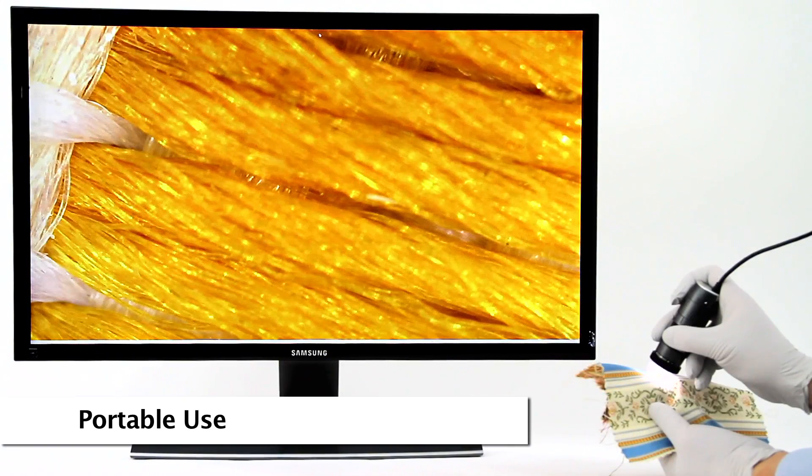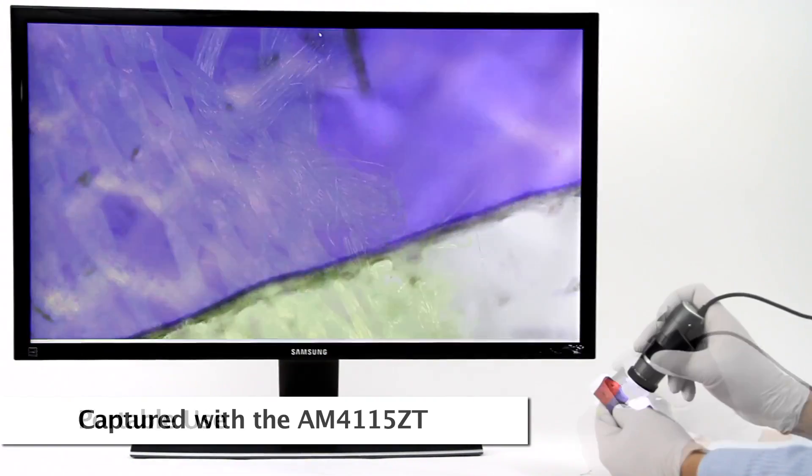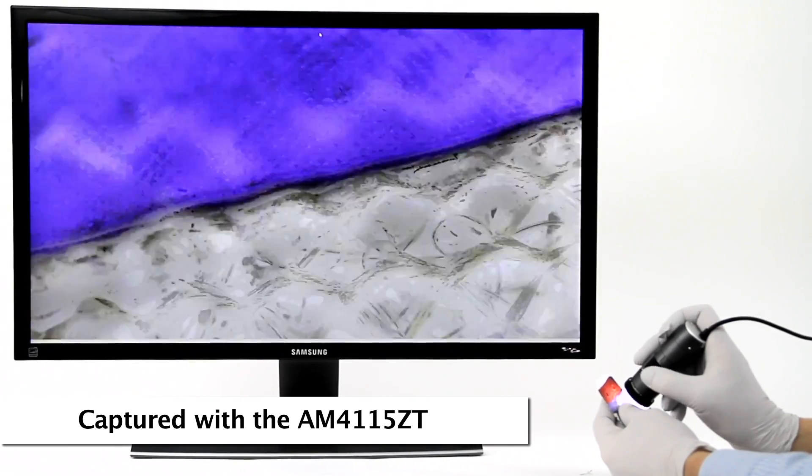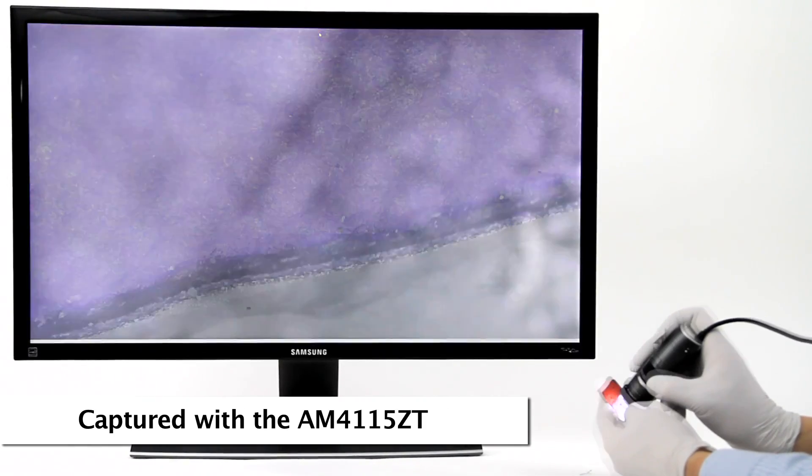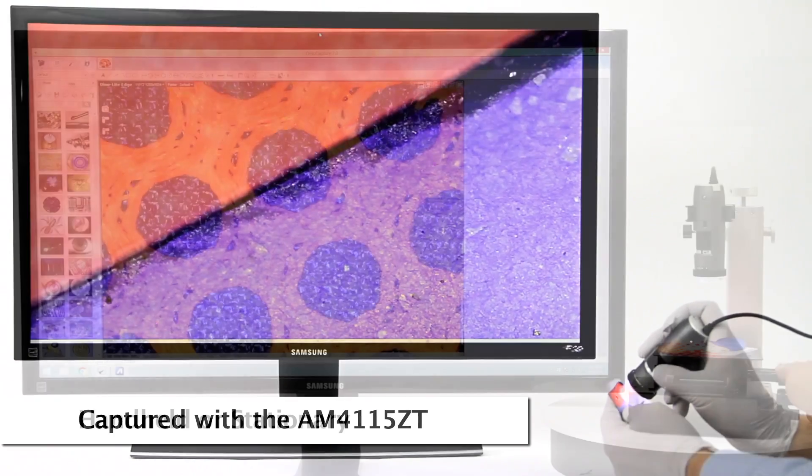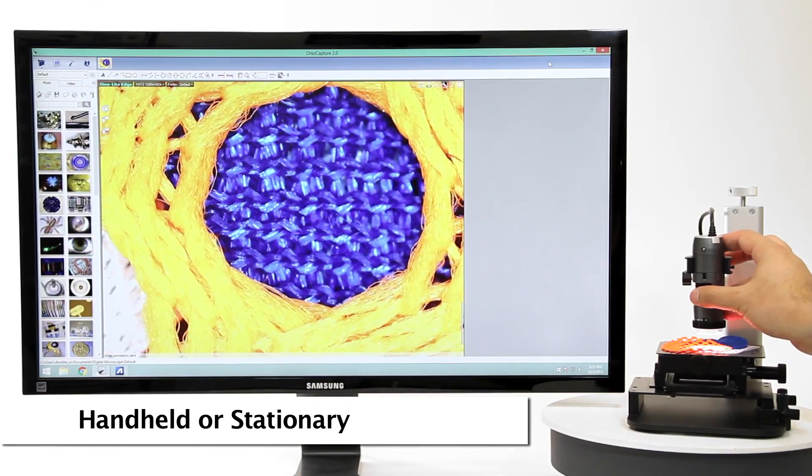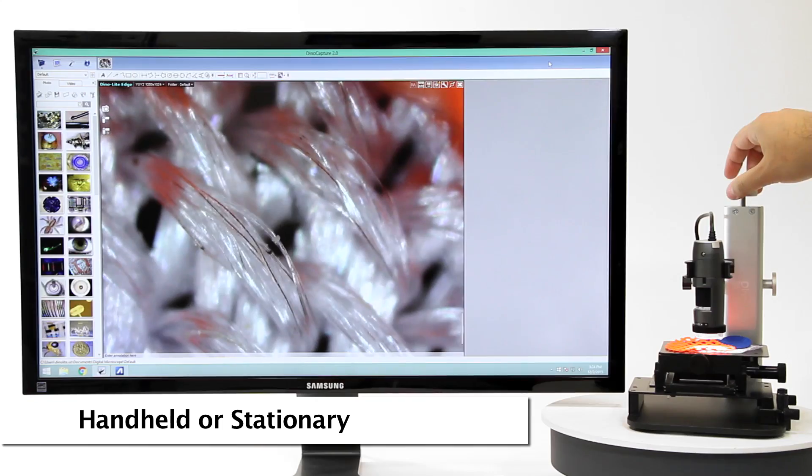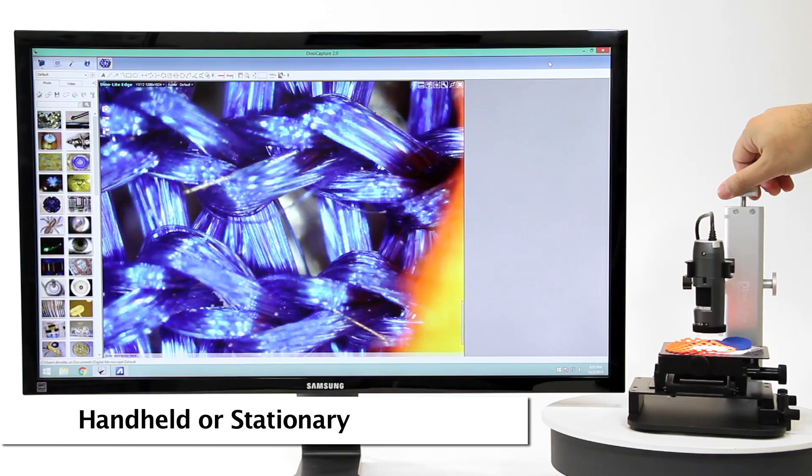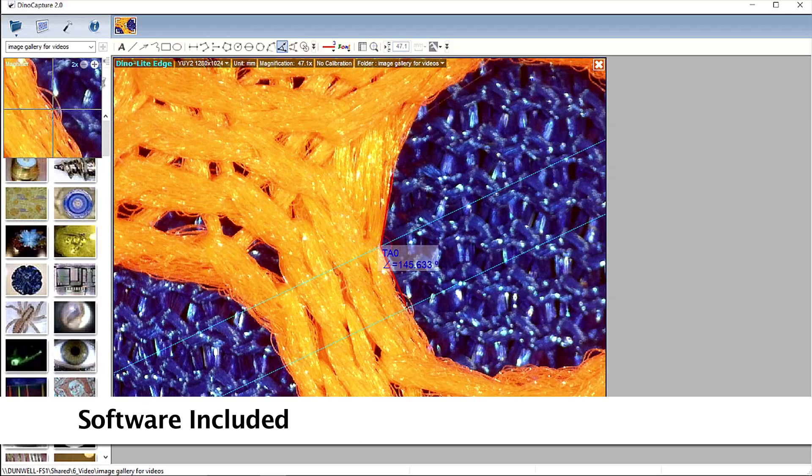The Dynolite is a handheld microscope camera with most standard models going up to 220 times magnification. These models are connected to a computer via USB and include easy to use software that allows users to capture images and video as well as many other basic and advanced features.